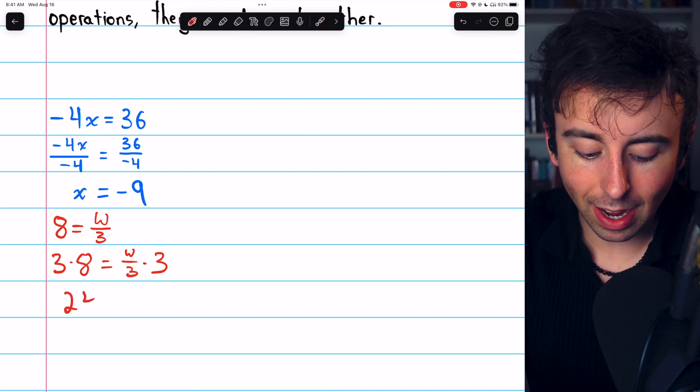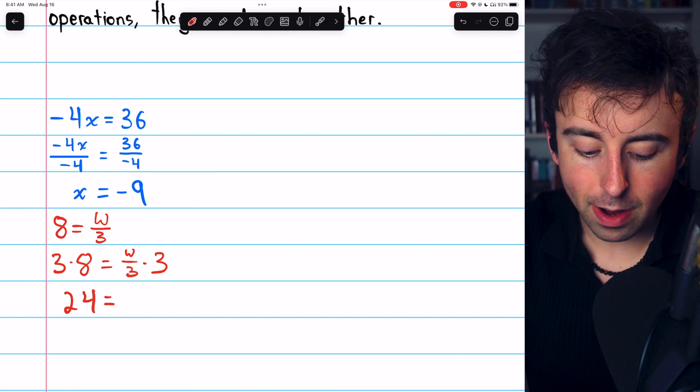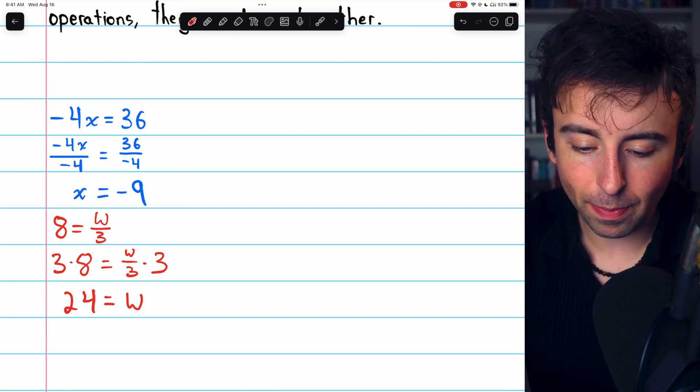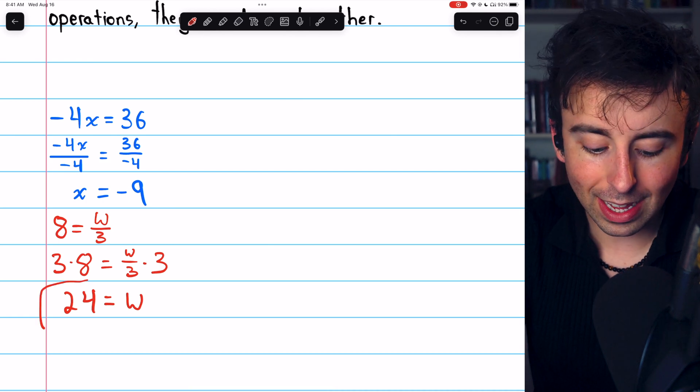On the left, 3 times 8 is 24. On the right, multiplying by 3 undoes the division by 3 and just leaves us with w, and that's our solution.